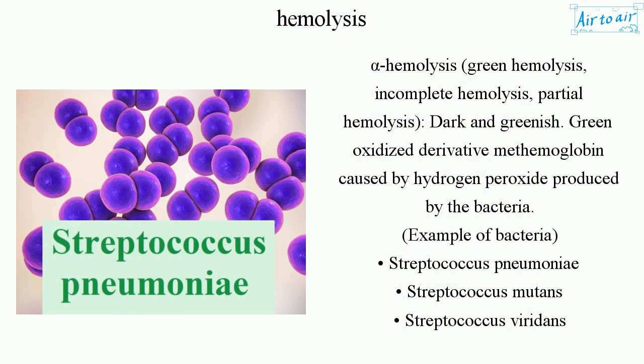Alpha hemolysis, also called green hemolysis, is incomplete or partial hemolysis. It produces a dark, greenish color due to the oxidized derivative methemoglobin, caused by hydrogen peroxide produced by the bacteria. Examples include Streptococcus pneumoniae, Streptococcus mutans, and Streptococcus viridans.